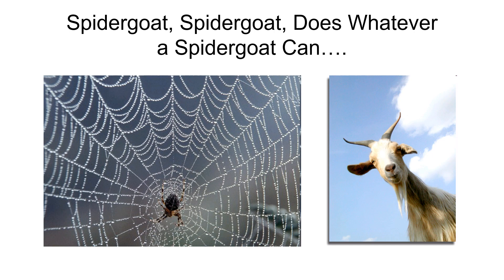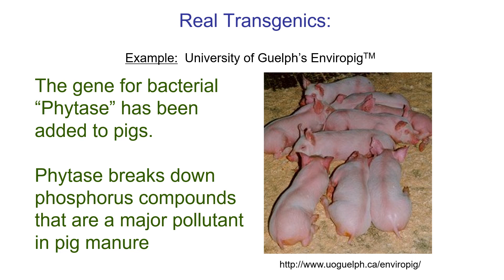The spider-goat looks like a normal goat in every way, but its milk contains spider silk protein that can be extracted. This is important because spider silk is remarkable — it has incredible tensile strength, stronger than steel for its width. We could make things like Kevlar vest material from it, but we could also make a very strong surgical thread.